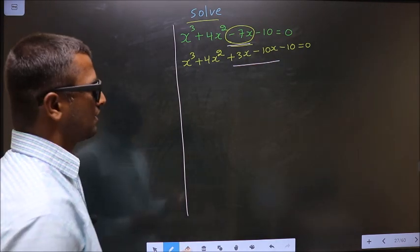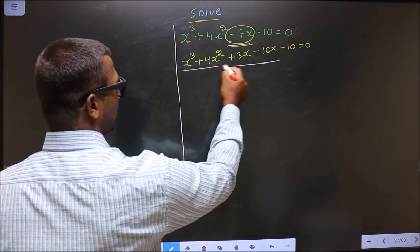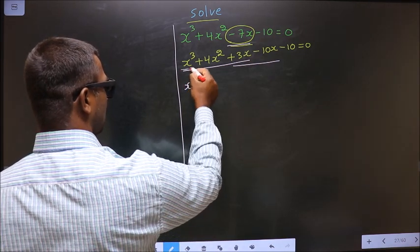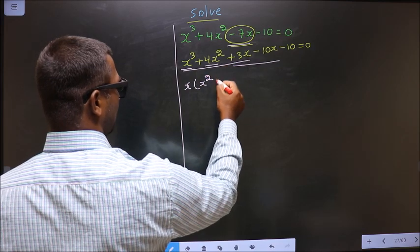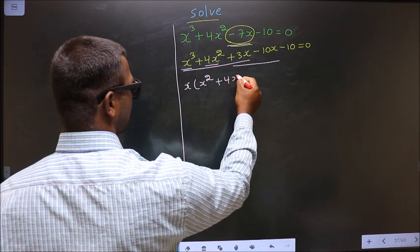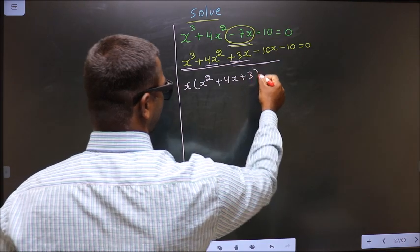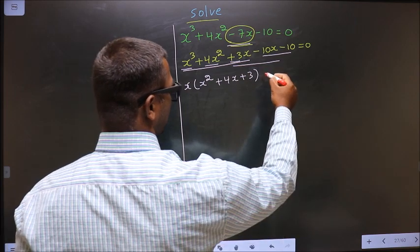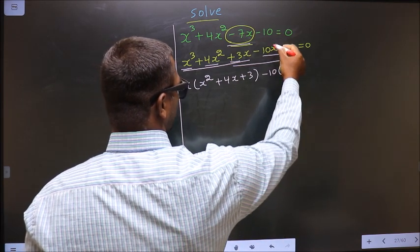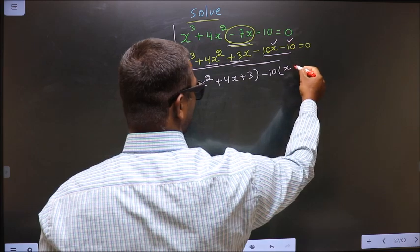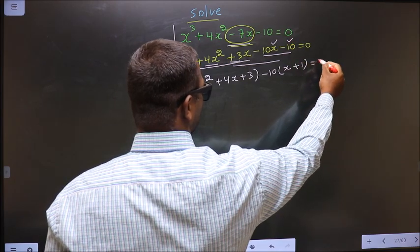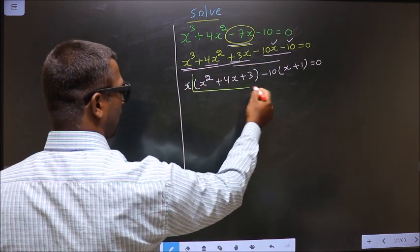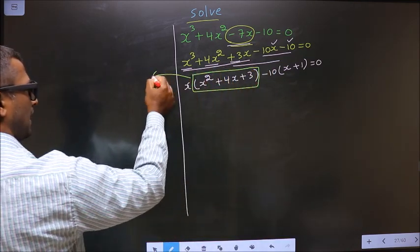Now, what can be taken out common from the first three terms is x, so we get x(x² + 4x + 3). From the last two terms, we take out -10 common, giving -10(x + 1) = 0. Now we have a quadratic expression to factorize.